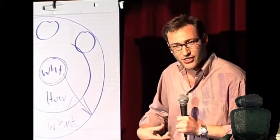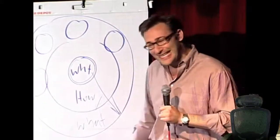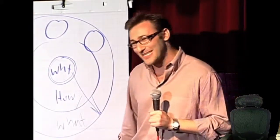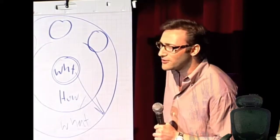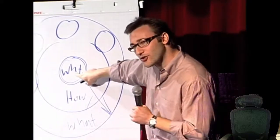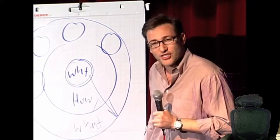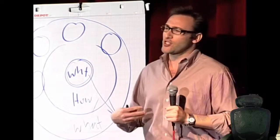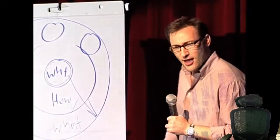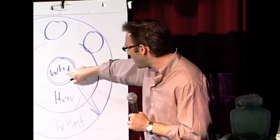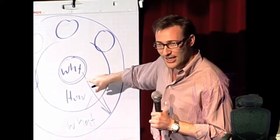When we communicate from the inside out, we talk directly to the part of the brain that controls behavior, and then people rationalize it with the tangible things we say and do. This is where gut decisions come from. Sometimes you give someone all the facts and they say, 'I know what all the facts say, but it just doesn't feel right.' The part of the brain that controls decision-making doesn't control language, so the best we can say is, 'It just doesn't feel right.'